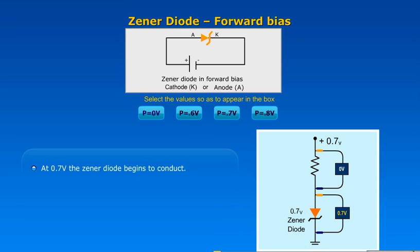When V is equal to 0.7V, the Zener diode begins to conduct.